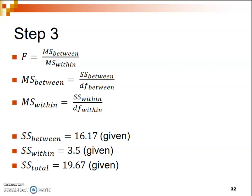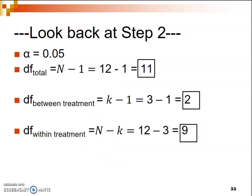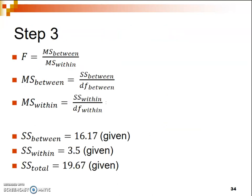In order to solve these equations, we have information from step 2 that will help us. Looking back at step 2, we already calculated several degrees of freedom values. Specifically, we'll need the DF between and the DF within to calculate our two MS values. Our DF between was identified as 2, and our DF within was identified as 9. I'm going to use those same values in these equations.